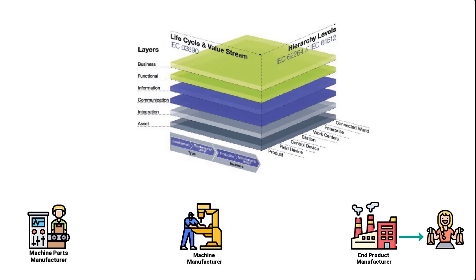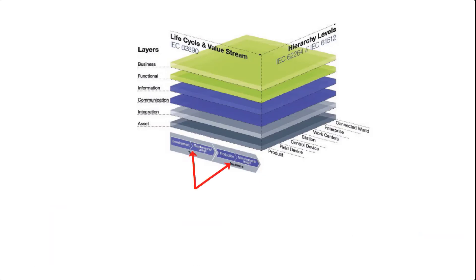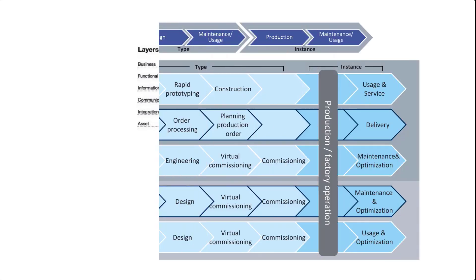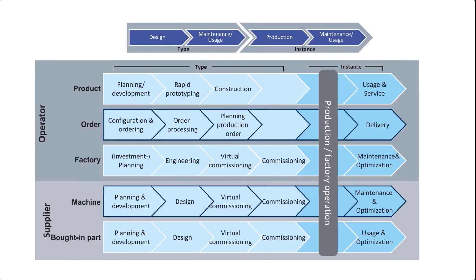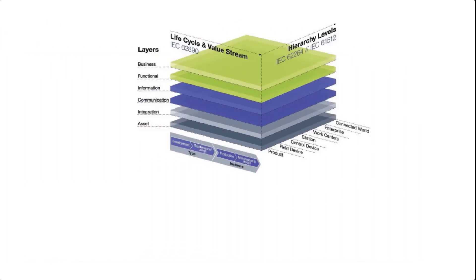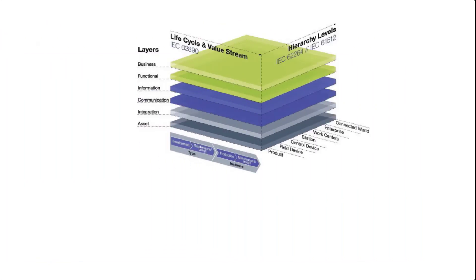From this, you can see that types also have development and usage or maintenance stages, just as physical instances do. Therefore, the reference model for Industry 4.0 deals with types and instances as separate but equivalent entities. Because of these interactions of life cycles from various stakeholders, the life cycle of an Industry 4.0 component can no longer be viewed in isolation, but rather as a collective of all parties involved, from component suppliers right down to the customers. Hence, the primary goal for RAMI 4.0 with these axes is to identify standards that could be used to establish relationships between types and instances of different stakeholders in the manufacturing value chain.